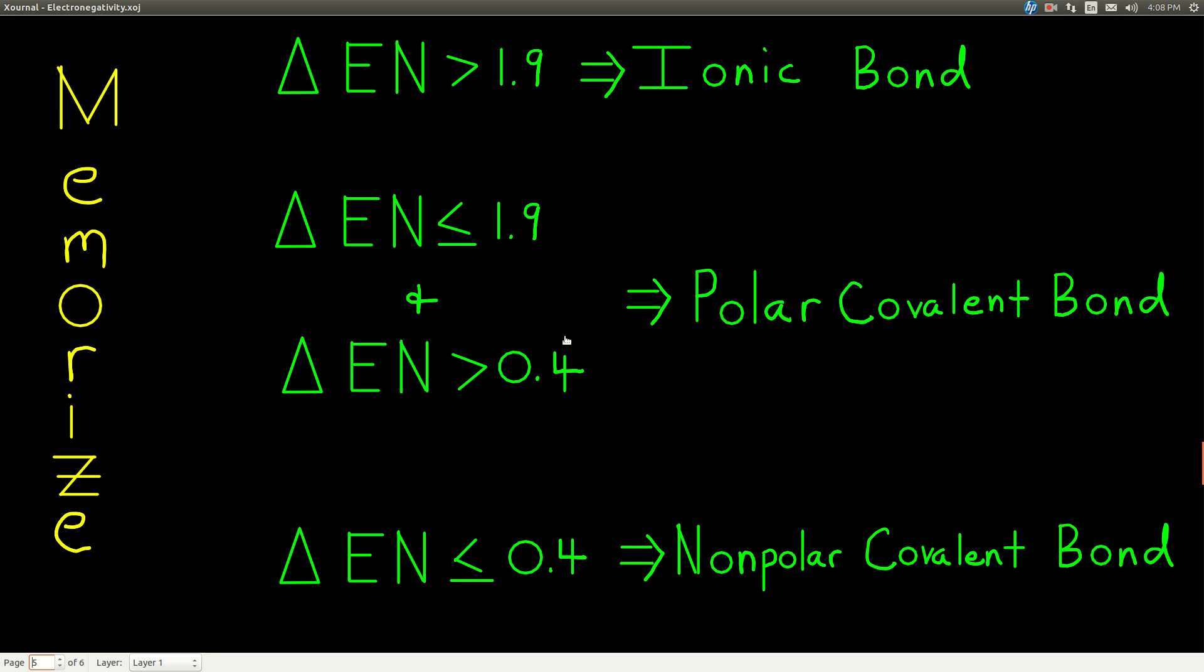Now that we know about electronegativities, we have a better way of defining what kind of bond and consequently what kind of compound something is. If the difference in electronegativity, this delta EN stands for the difference in electronegativity between two elements is bigger than 1.9, we call that an ionic bond. And we'll do some examples in just one second. If the difference in electronegativity between two elements is bigger than 0.4 but less than or equal to 1.9, then we call that a covalent bond, and in particular, we call it a polar covalent bond.